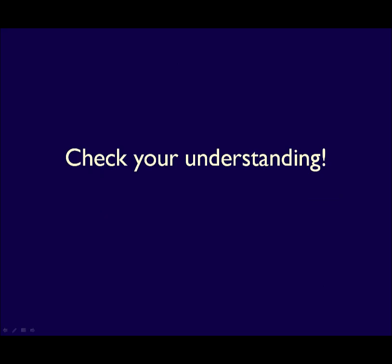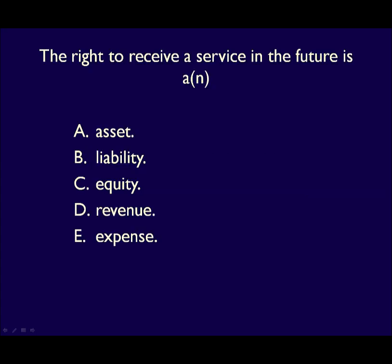Let's do a quick check of your understanding — remember to pause the video and answer before I do. The right to receive a service in the future is a current asset called prepaid expense. It's an asset because in the past the business paid for a service but didn't receive it, giving them a legal right to receive it in the future. It's a current asset because the benefit will likely be received within one year of the balance sheet date.